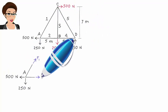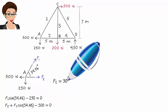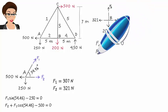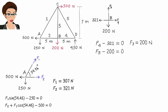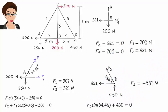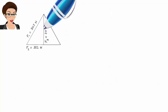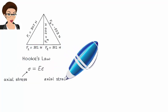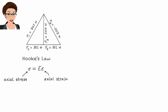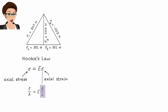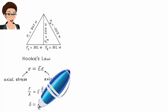The member forces are: F1 equals 307 newtons, F2 equals 321 newtons, F3 equals 200 newtons, F4 equals 321 newtons, and F5 equals negative 553 newtons. Now let's determine the axial elongation of each member due to the real loads. According to Hooke's law, axial stress equals modulus of elasticity times axial strain, where axial stress equals axial force divided by cross-sectional area, and axial strain equals member elongation divided by its length. Therefore, axial elongation of each member is given by delta equals FL over EA.